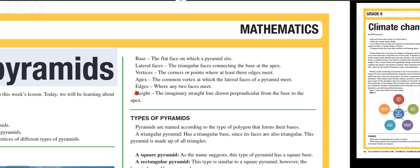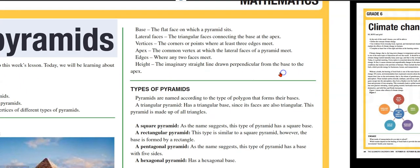Edges: where any two faces meet. Height: the imaginary straight line drawn perpendicular from the base to the apex. Perpendicular means it forms right angles.